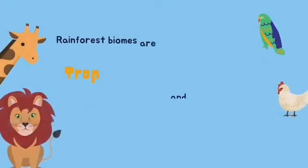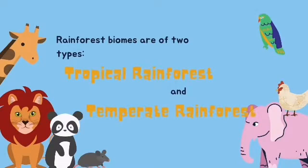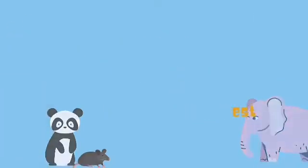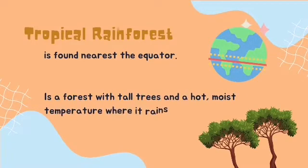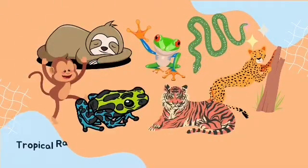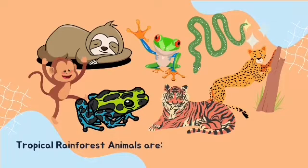Rainforest habitats are of two types: tropical rainforest and temperate rainforest. A tropical rainforest is found nearest the equator. It is a forest with tall trees and hot, moist temperature where it rains all year long. Tropical rainforest animals include sloth, jaguars, tigers, monkeys, green anaconda, poison dart frogs, and the red-eyed tree frog.